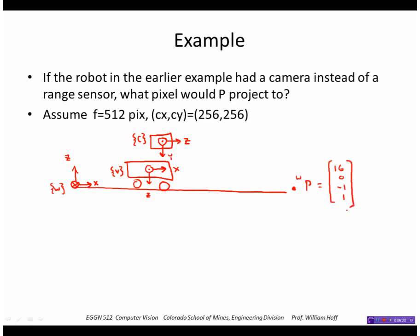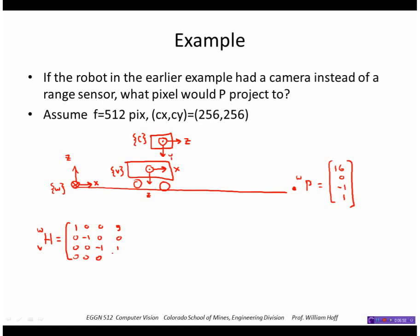We also had that the vehicle to world transform was given by 1, 0, 0, 5, 0, minus 1, 0, 0, 0, 0, minus 1, 0, and that's just the usual zero zero zero one down below.